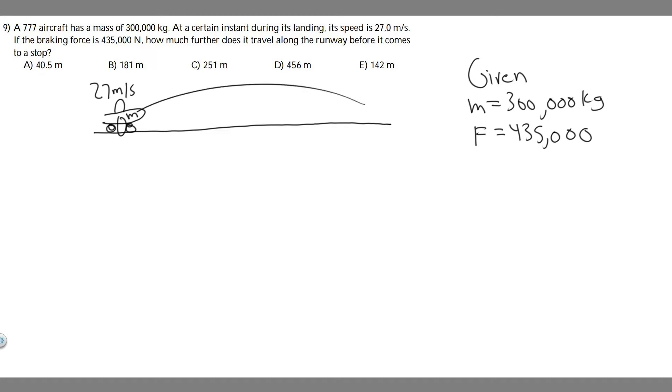So what we want to do first is just draw what's going on. So we have this plane, it's basically on the ground now, and we know it's traveling 27 meters per second. We know it's going to have some force going against it. That's going to be a braking force, 435,000 newtons.